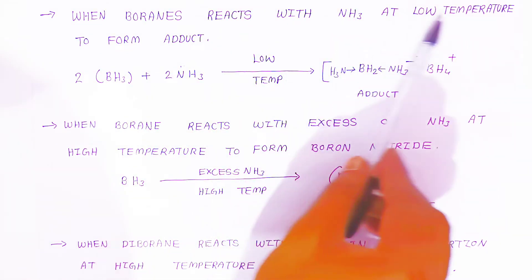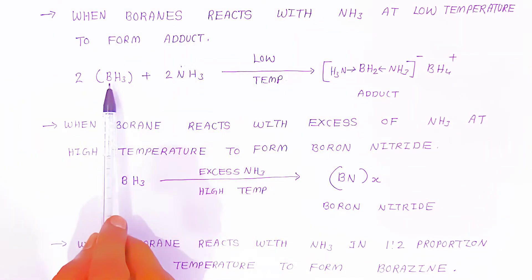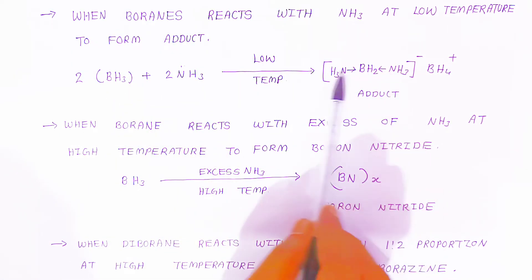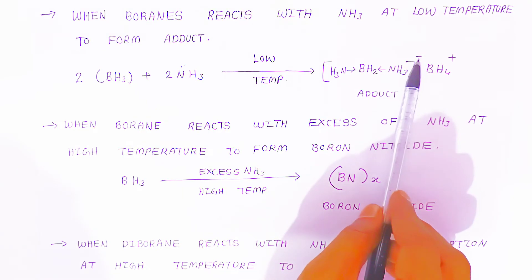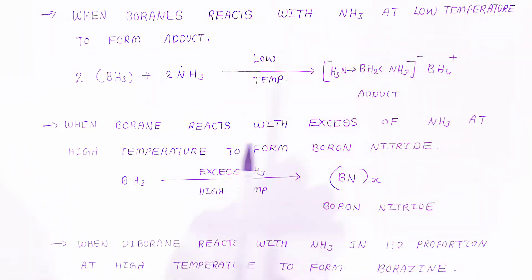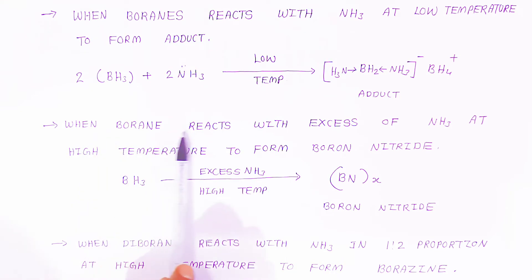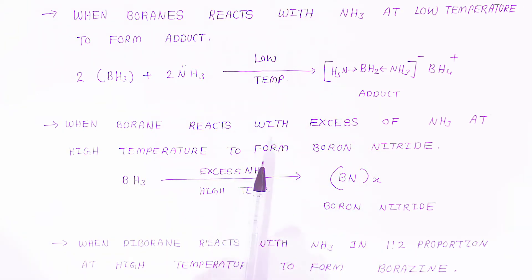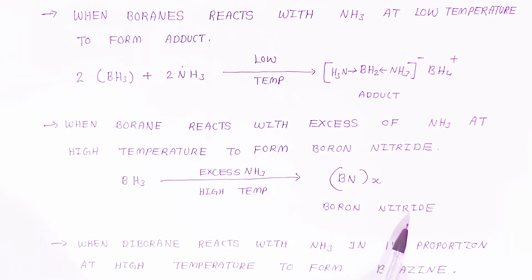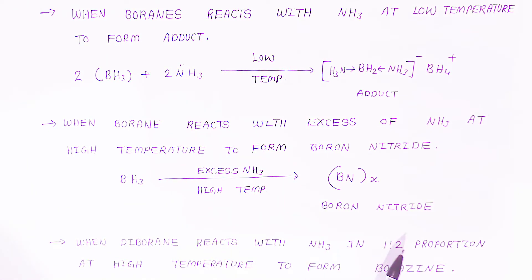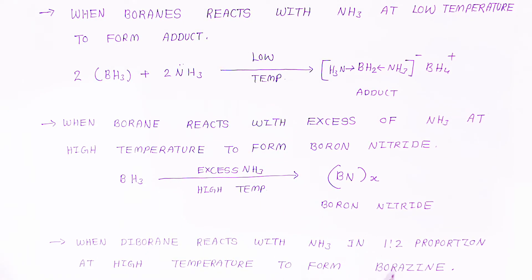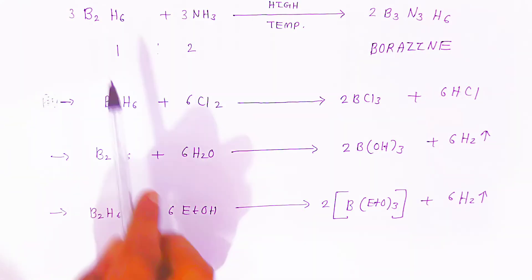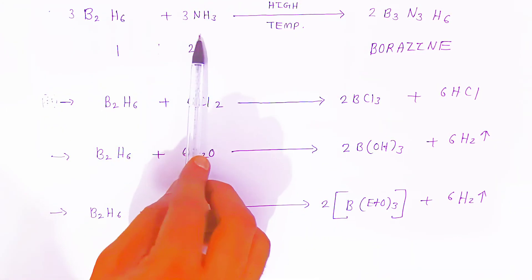When boranes react with ammonia at low temperature, an adduct is formed — the borane and ammonia join together forming an adduct compound with positive and negative ionic character. When borane reacts with excess ammonia at high temperature, it forms boron nitride. Temperature is very important: low temperature gives an adduct, high temperature gives boron nitride. When diborane reacts with ammonia in a 1:2 ratio at high temperature, it forms borazine, with the structure B₃N₃H₆.